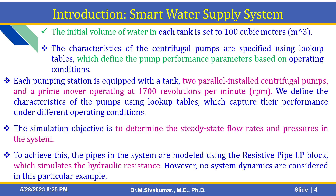The characteristics of the centrifugal pumps are specified using lookup tables, which define pump performance parameters based on the operating conditions. Each pumping station is equipped with a tank, two parallel centrifugal pumps, and a prime mover operating at 1700 RPM. The simulation objective is to determine the steady state flow rates and pressures in the system. The pipes are modeled using the resistive pipe LP block, available in the MATLAB Simulink library browser.